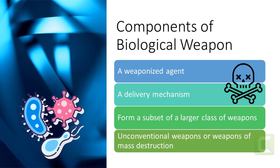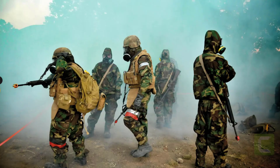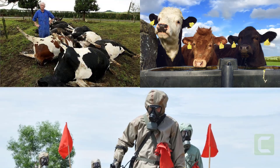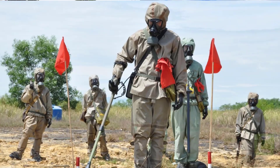Biological weapons generally consist of two parts: a weaponized agent and a delivery mechanism. In addition to strategic or tactical military applications, biological weapons can be used for political assassinations, the infection of livestock or agricultural produce to cause food shortages and economic loss, the creation of environmental catastrophes, and the introduction of widespread illness, fear, and mistrust among the public.